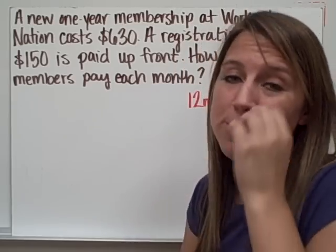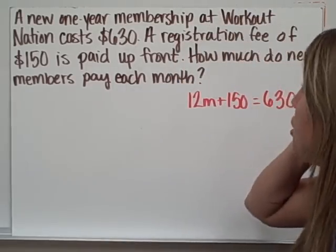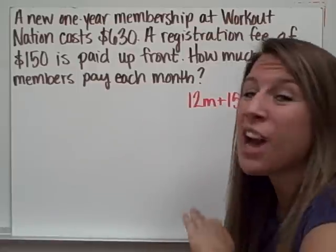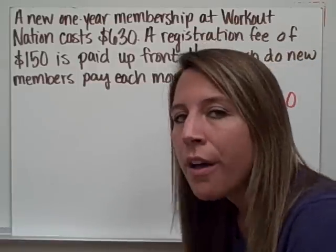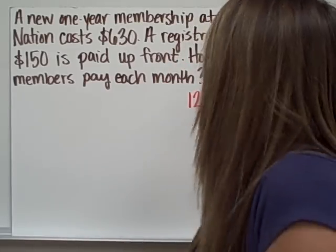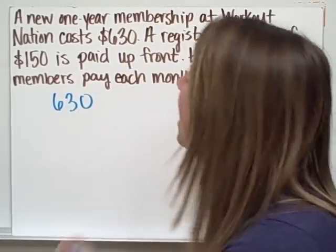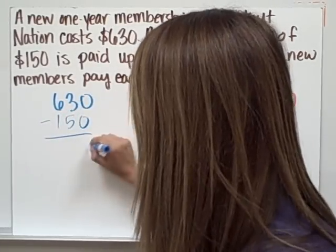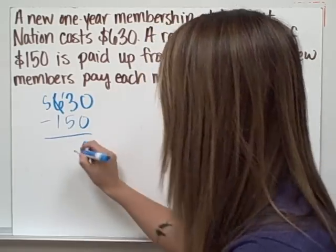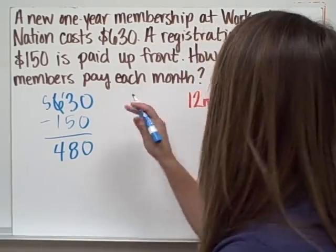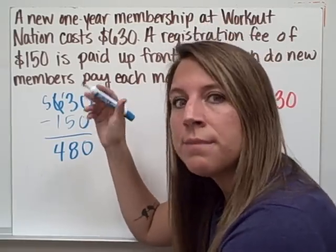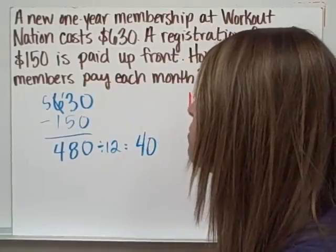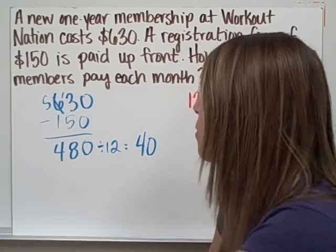So here's a bit of application where your two-step equations are really going to start coming into play. A new one-year membership at Workout Nation costs $630. A registration fee of $150 is paid up front. How much do new members pay each month? Well, let's just think through it for a second. If it costs $630 for a whole year, and you have to pay a $150 registration fee, then that means without that registration fee, you pay $480. Well then, it asks, how much do you pay each month? Well, how many months are in a year? 12. So I can divide by 12, and that's going to come out to be 40. So $40 a month.